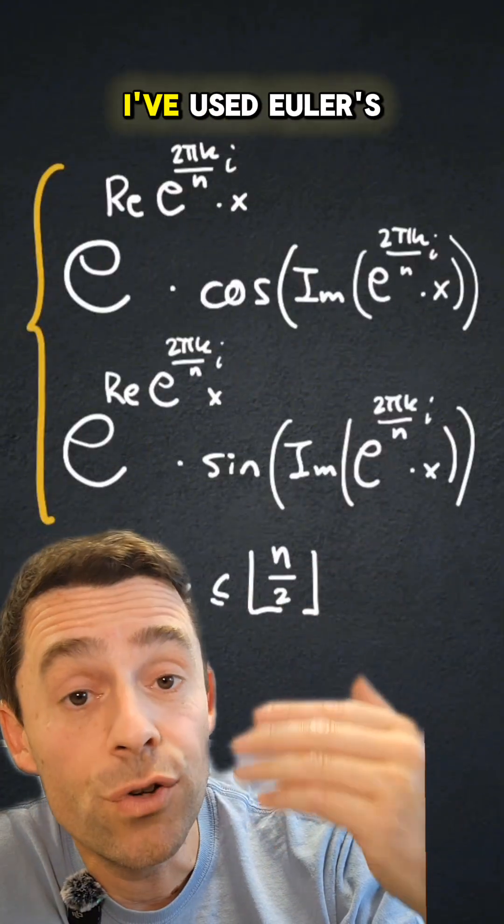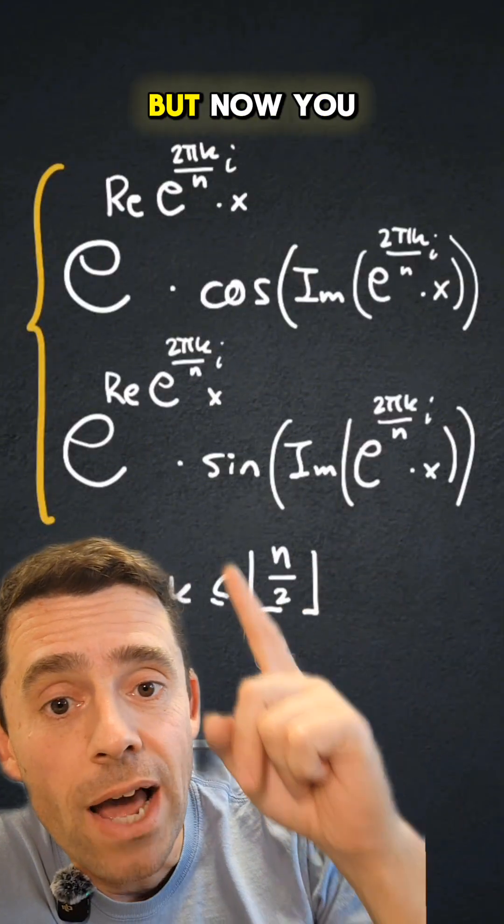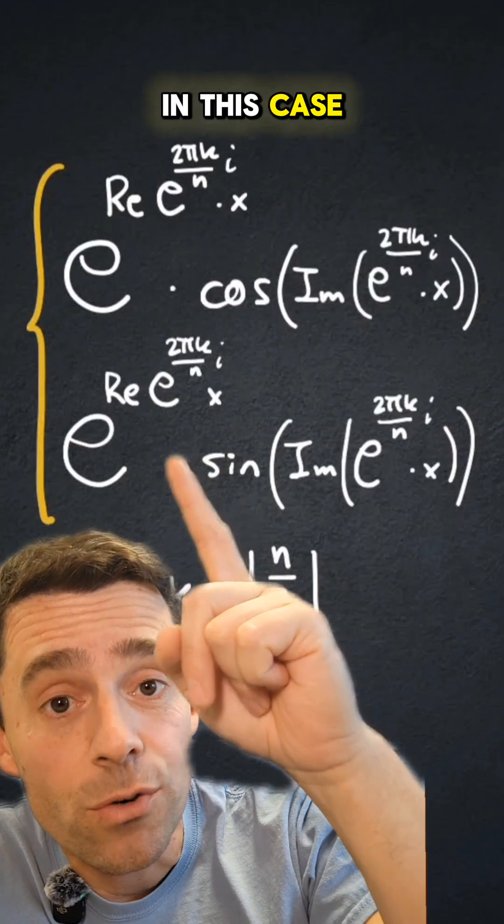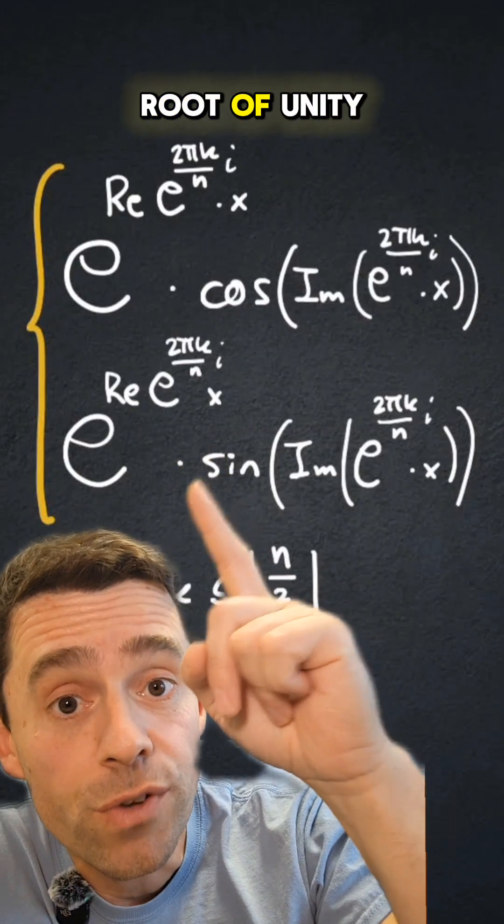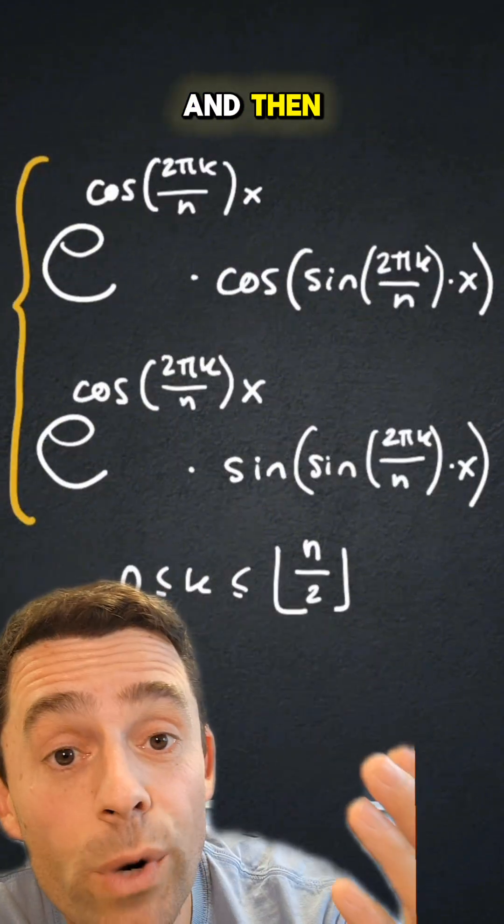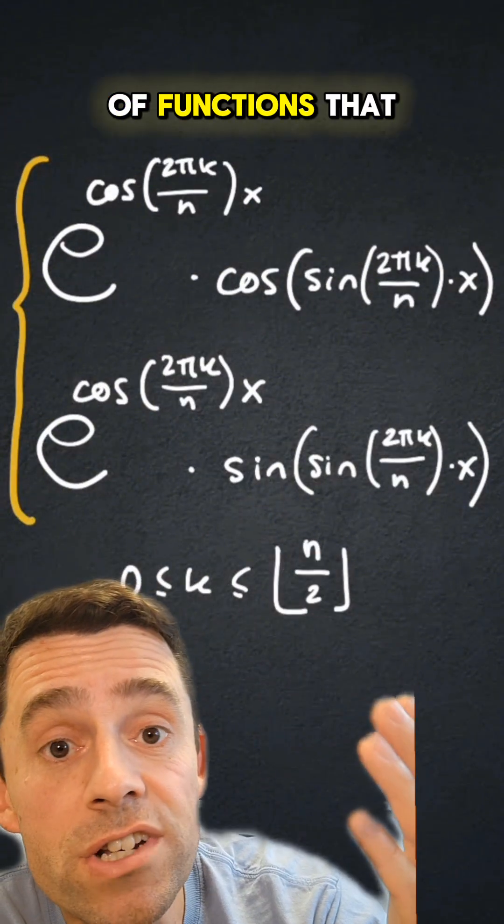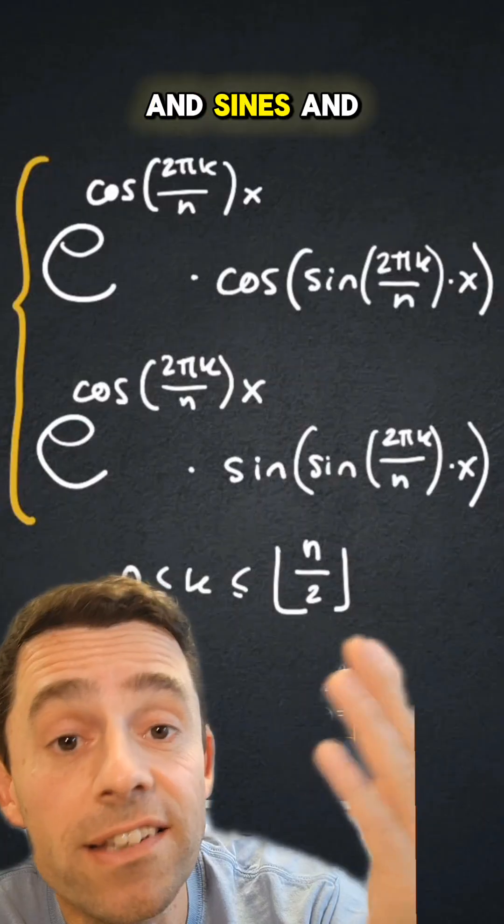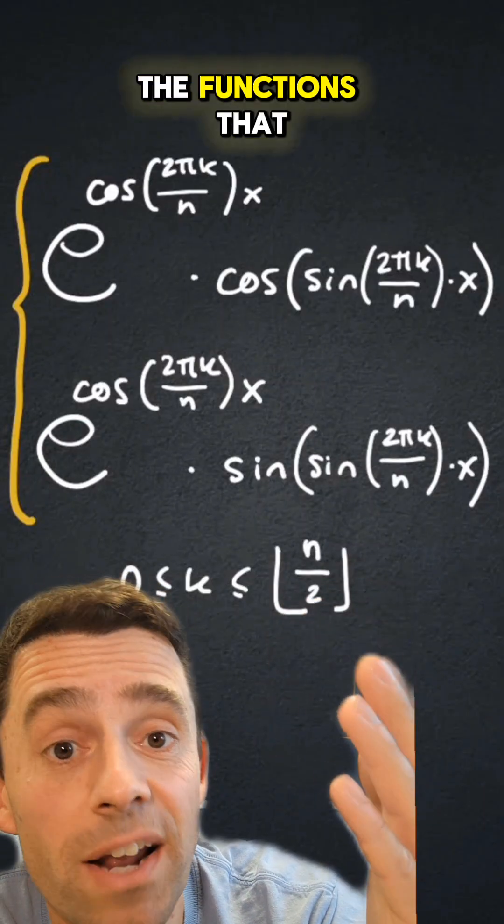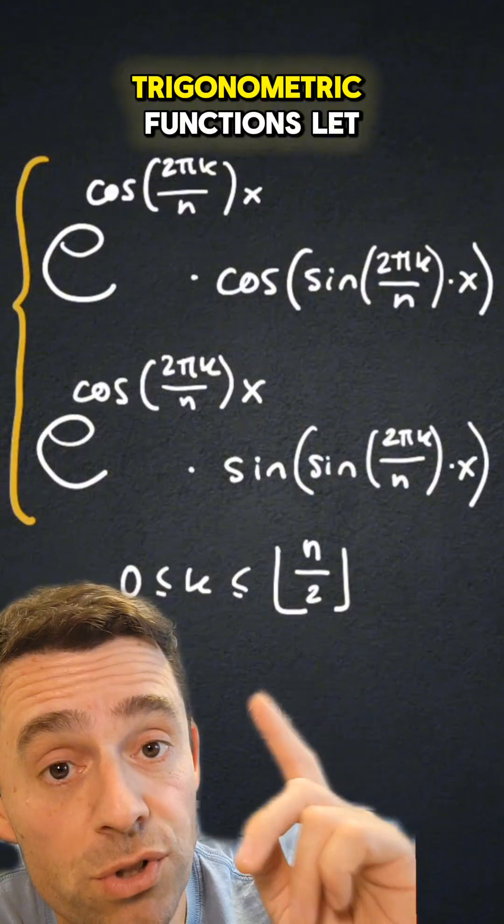So here's the solution after I've used Euler's formula once, but now you see I have another real part of a complex exponential, in this case the real part of an nth root of unity. So let's use Euler's formula again. And then what I get is this family of functions that are given by exponentials and sines and cosines, and these are the functions that I'm going to call the spiral trigonometric functions.